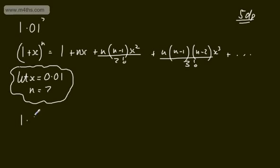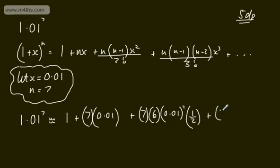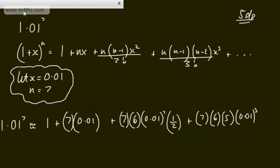We can now write 1.01^7 ≈ 1 + 7×(0.01) + 7×6×(0.01)^2×(1/2) + 7×6×5×(0.01)^3×(1/6). Here n = 7, n−1 = 6, n−2 = 5, and we divide by 2! and 3! respectively. I prefer writing the factorial as a fraction (multiply by 1/2 or 1/6) since it makes the denominator clearer, especially with fractional values.